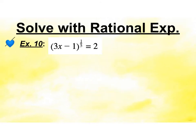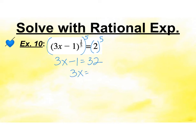Switching over to rational exponents. This group is raised to the 1 fifth. If I want to undo a 1 fifth exponent, I'm going to raise the whole side to the 5, because a power to a power means multiplying, and 1 fifth times 5 is 1. Doing it to both sides, I end up with 3x minus 1 equals 32. Add the 1 over and we get x to be 11.